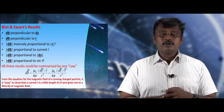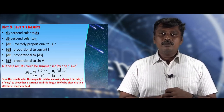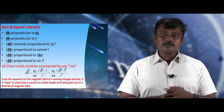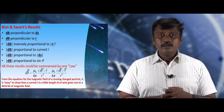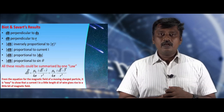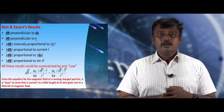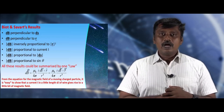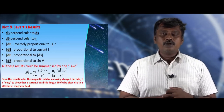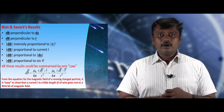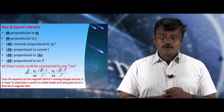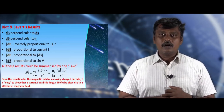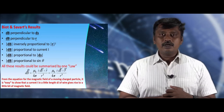dB is proportional to the current I, proportional to the elemental length ds, inversely proportional to r square, and proportional to sin of the angle between the line joining the point and the current element. Consolidating all these, dB is proportional to I·ds·sin θ / r². To remove the proportionality, we introduce the constant mu₀ / 4π. Therefore, dB = (mu₀ / 4π) · I·ds·sin θ / r². This is the magnetic induction due to the small current element.